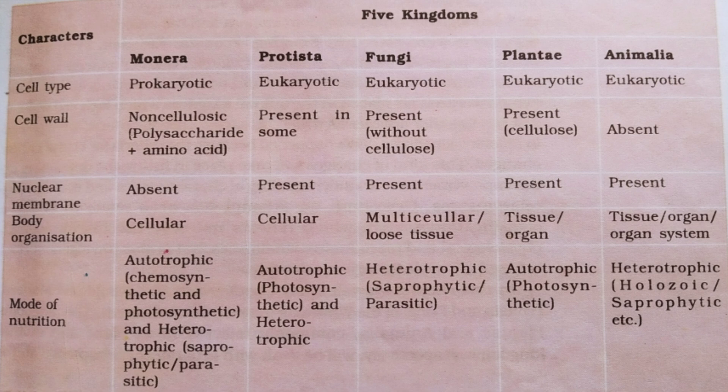The next kingdom is Kingdom Plantae. They are eukaryotic forms and the cell wall is present with a cellulosic cell wall. Nuclear membrane is present and body organization is at the tissue or organ level. The mode of nutrition is autotrophic, that is photosynthetic.